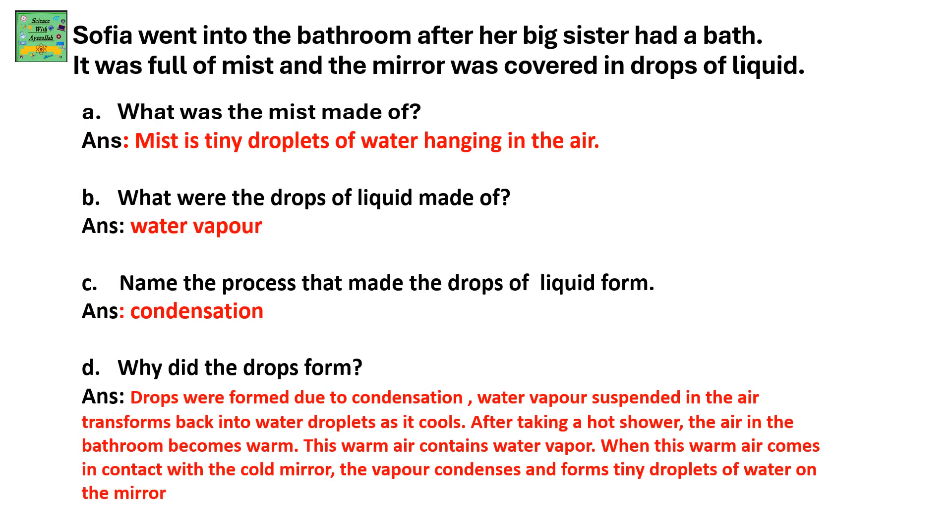Sophia went into the bathroom after her big sister had a bath. It was full of mist and the mirror was covered in drops of liquid. What was the mist made of? The mist was made of tiny droplets of water hanging in the air. What were the droplets of liquid made of? Those were made of water vapor. Name the process that made the drops of liquid form. It was condensation.